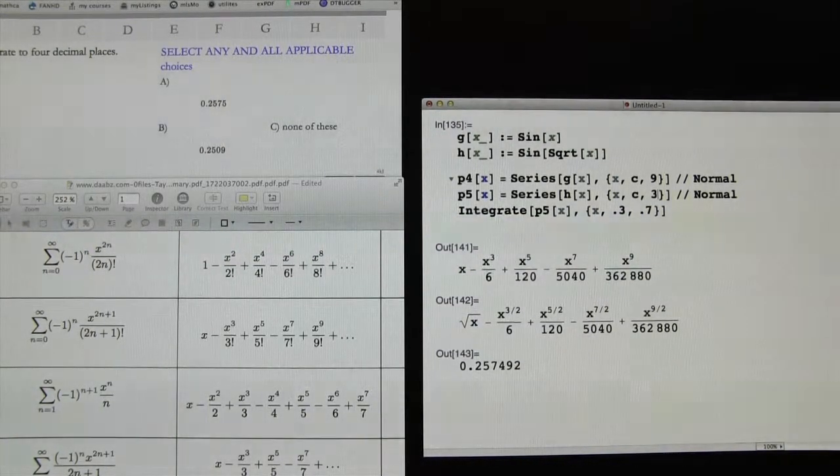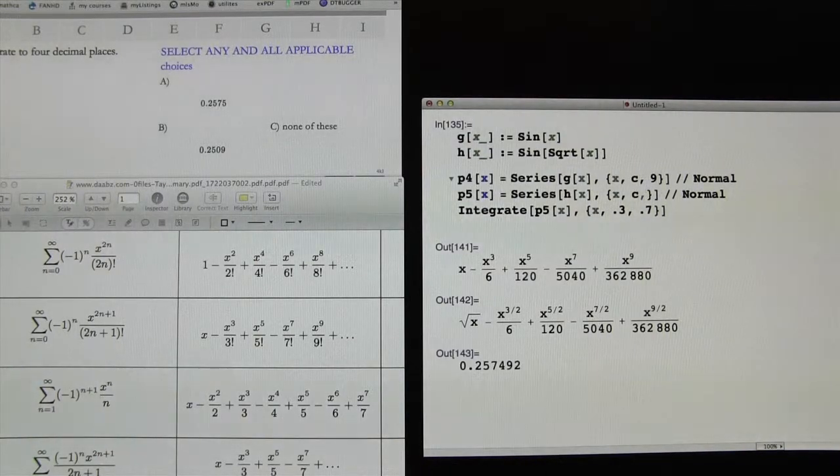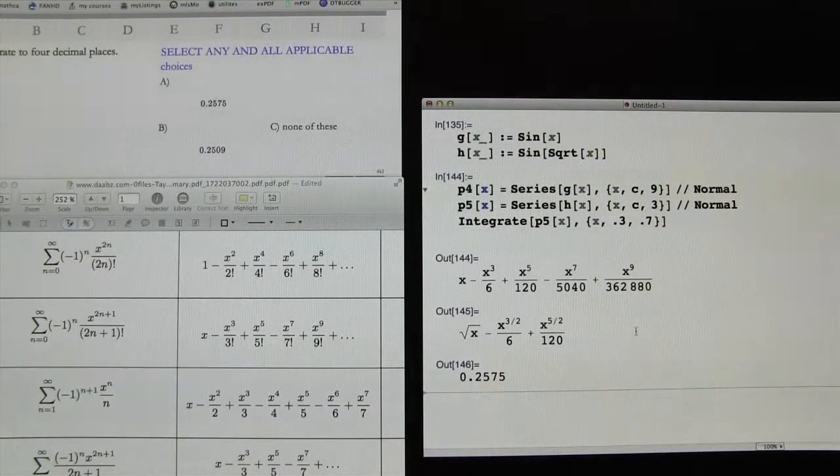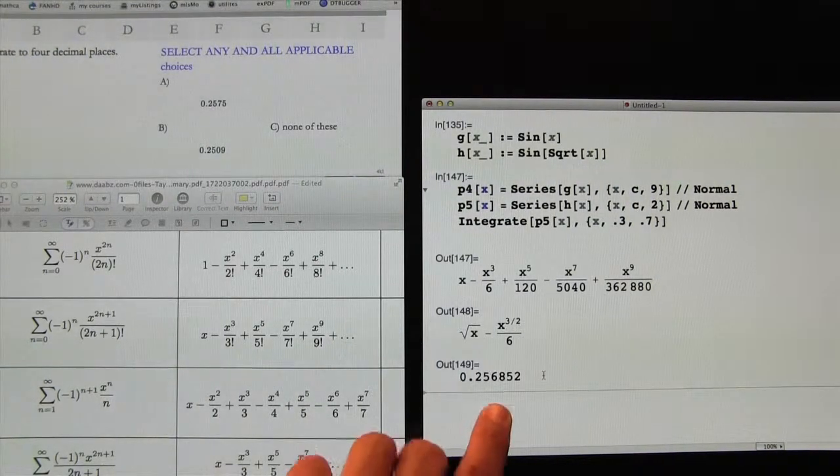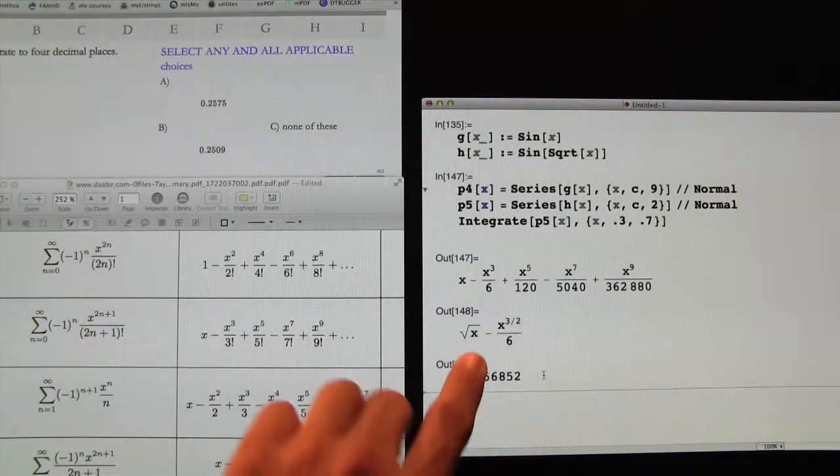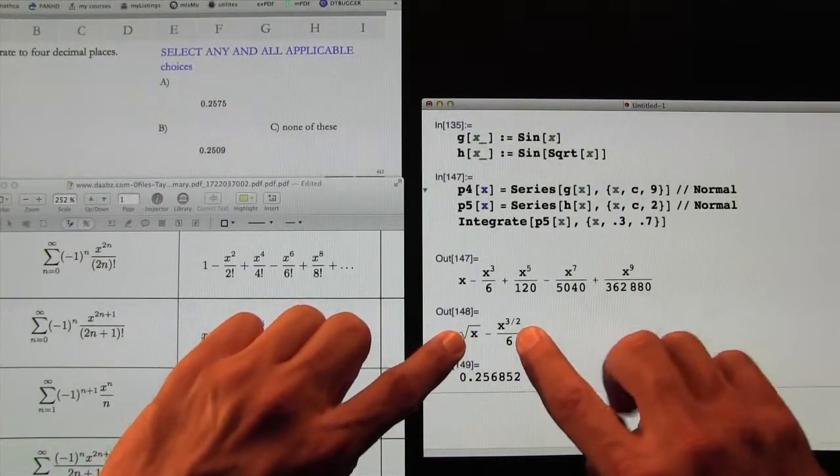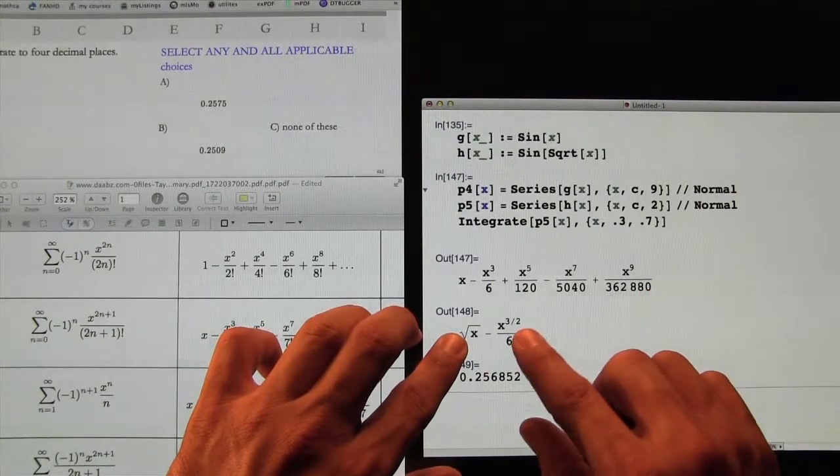Say something like 3. And that would give me a different one. If I say something like 2, well, that would give me, you see, the answer is changing. Every time I make this polynomial shorter, the approximation for my sine is not as good.